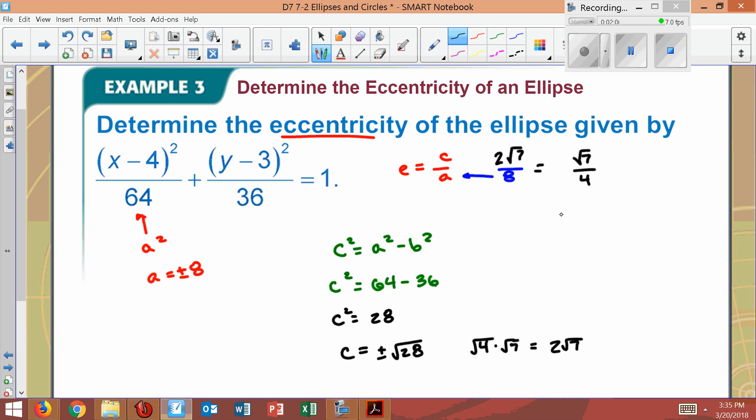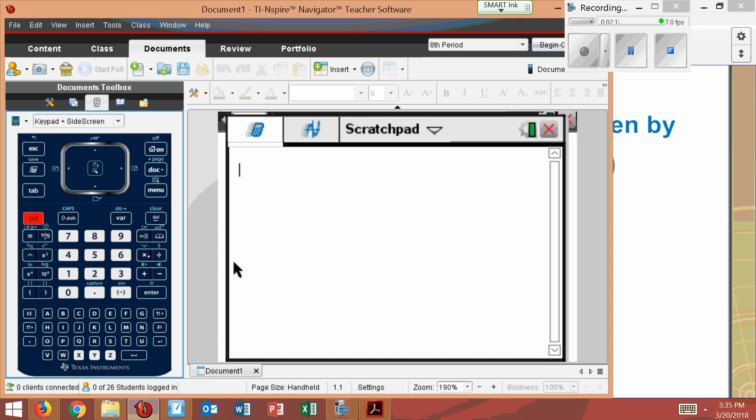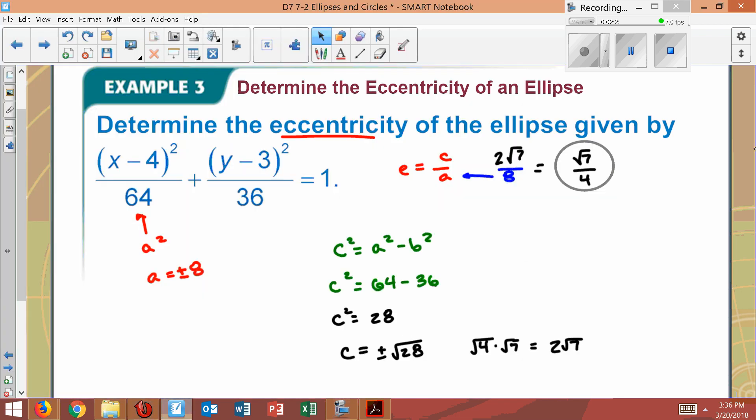That's the easiest way of determining the eccentricity. You could write it this way. But oftentimes, they'll give it to you as a decimal. So let's go over the calculator. And as a decimal, we would simply say that is the value of the square root of 7 over 4. 0.6614. So we could say that this is 0.6614. We could write it this way as well.